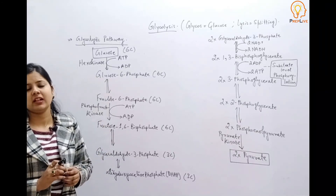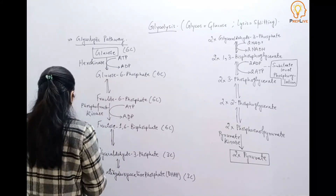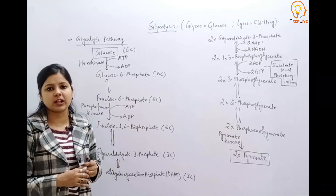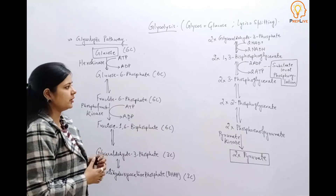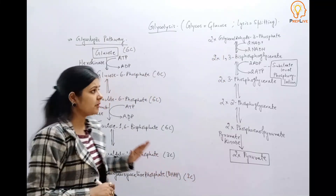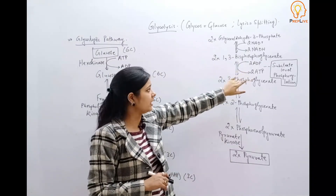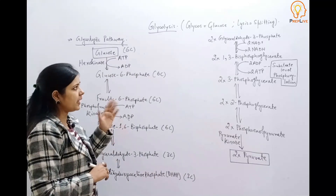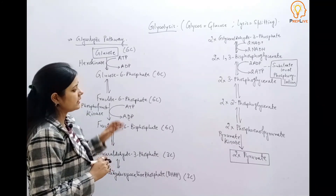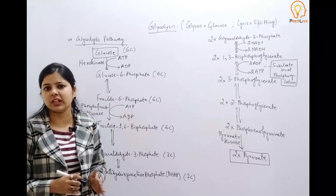There are three enzymes that irreversibly catalyze reactions in glycolysis. The net energy yield — the net result of this pathway — is two molecules of ATP and two molecules of NADH. The ATP utilized at the beginning is offset by the ATP released through substrate-level phosphorylation. There is no involvement of molecular oxygen in this process, and no CO2 molecules are released.